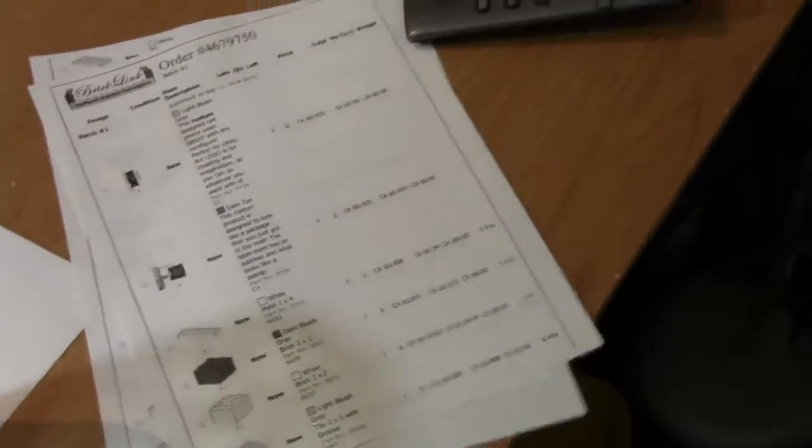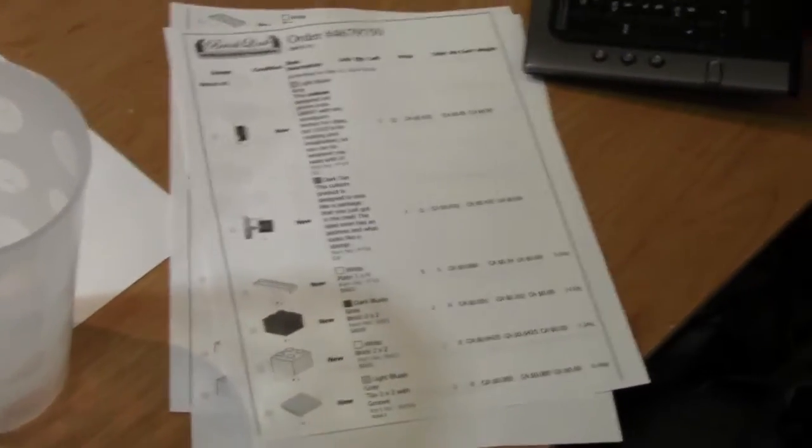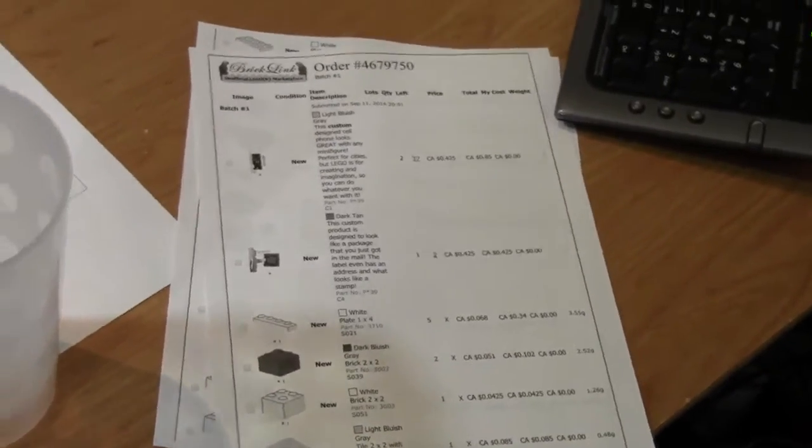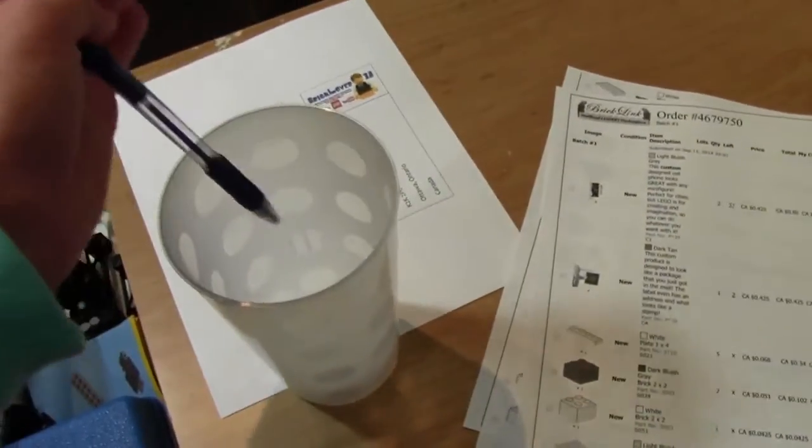So I have my BrickLink sheet here and this is from a buyer I've actually already dealt with on eBay but now it's on BrickLink. So I have my order invoice here, my pen and my cup.